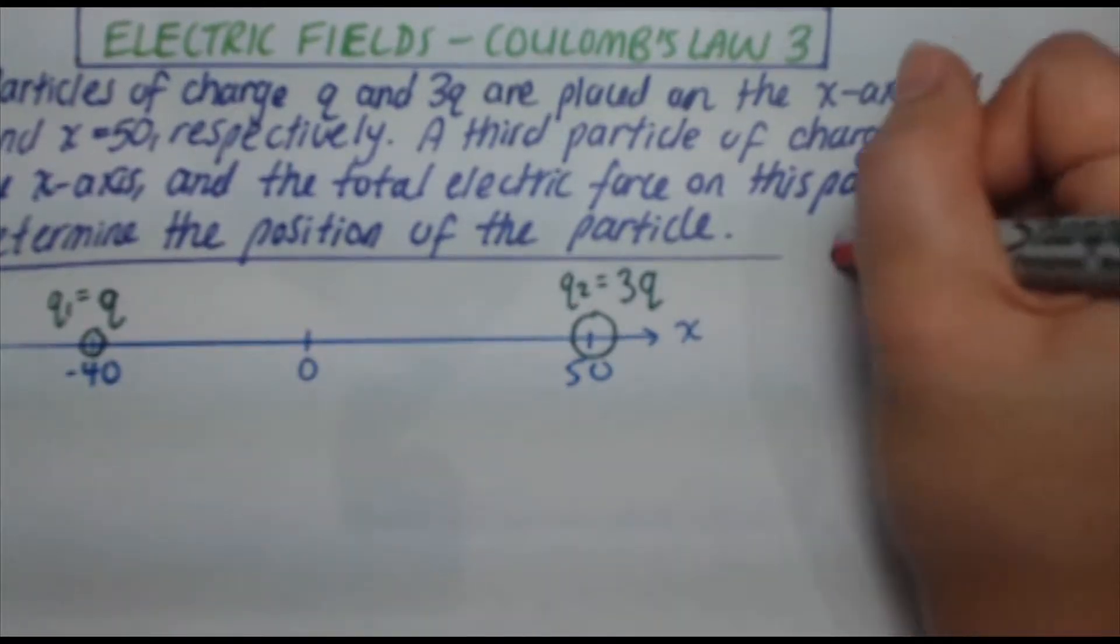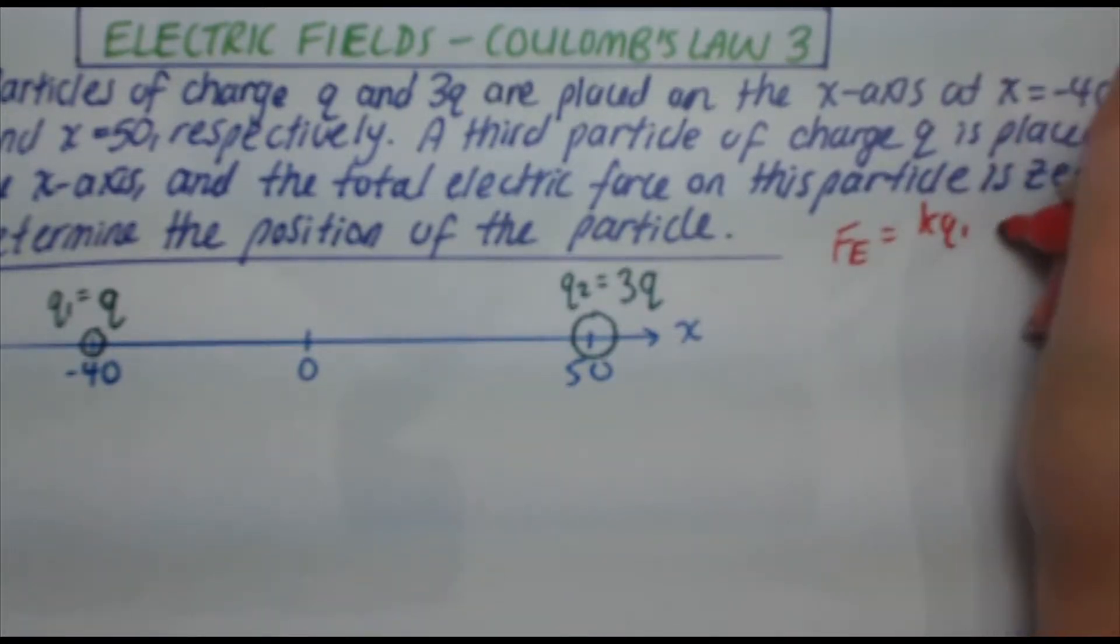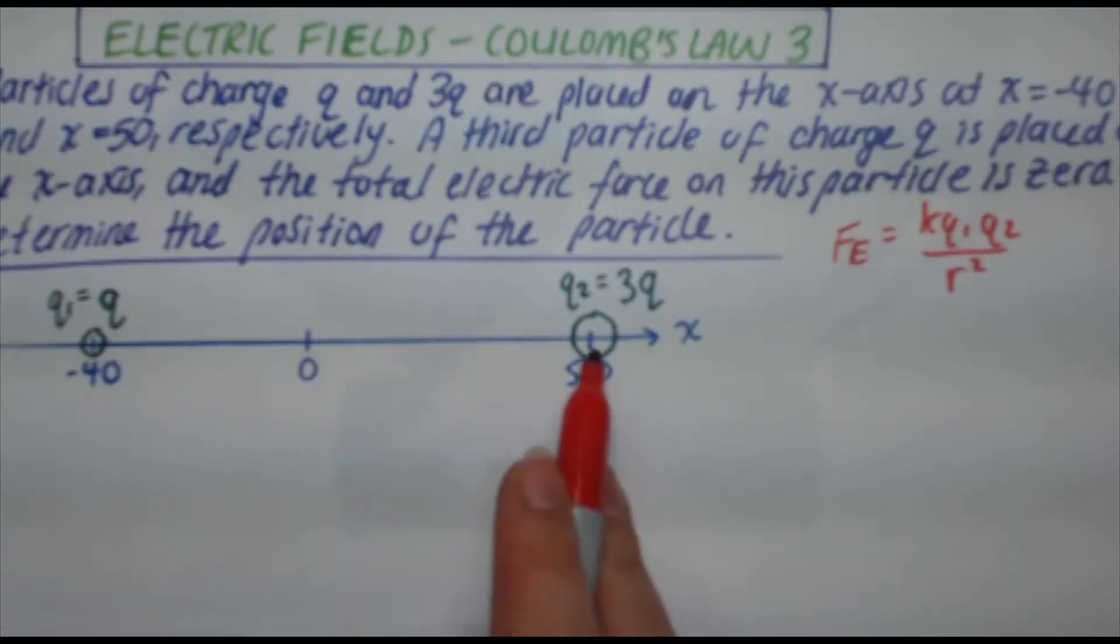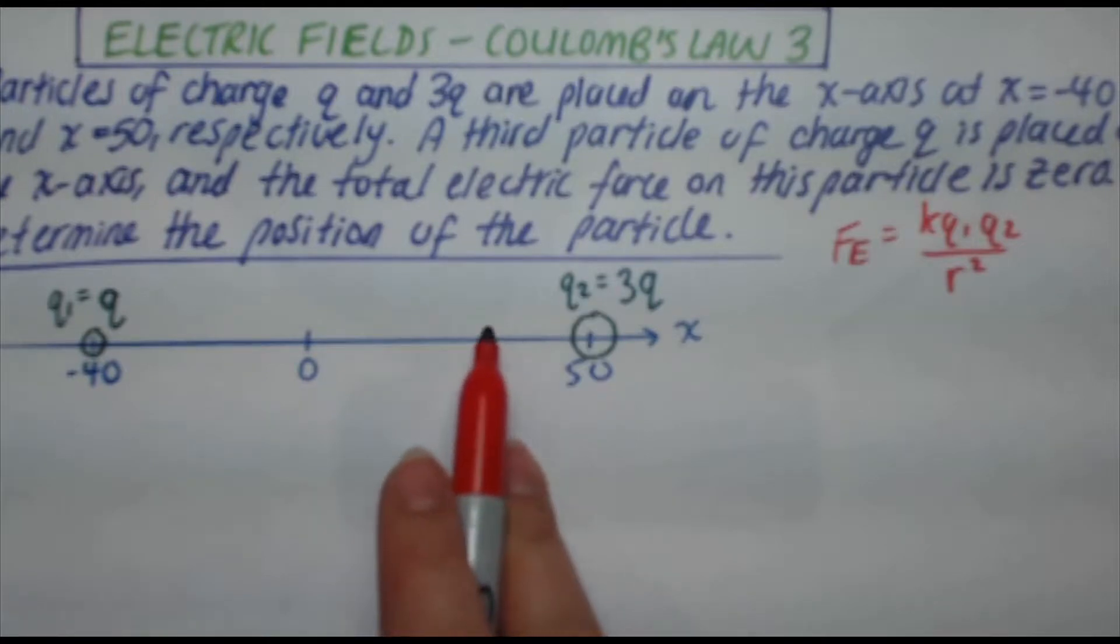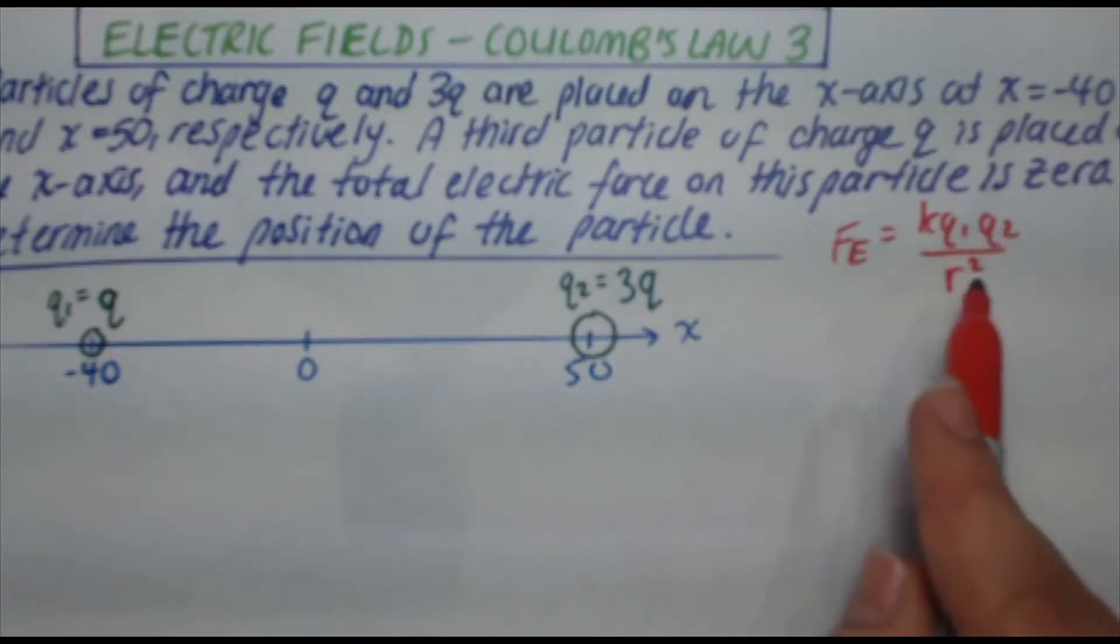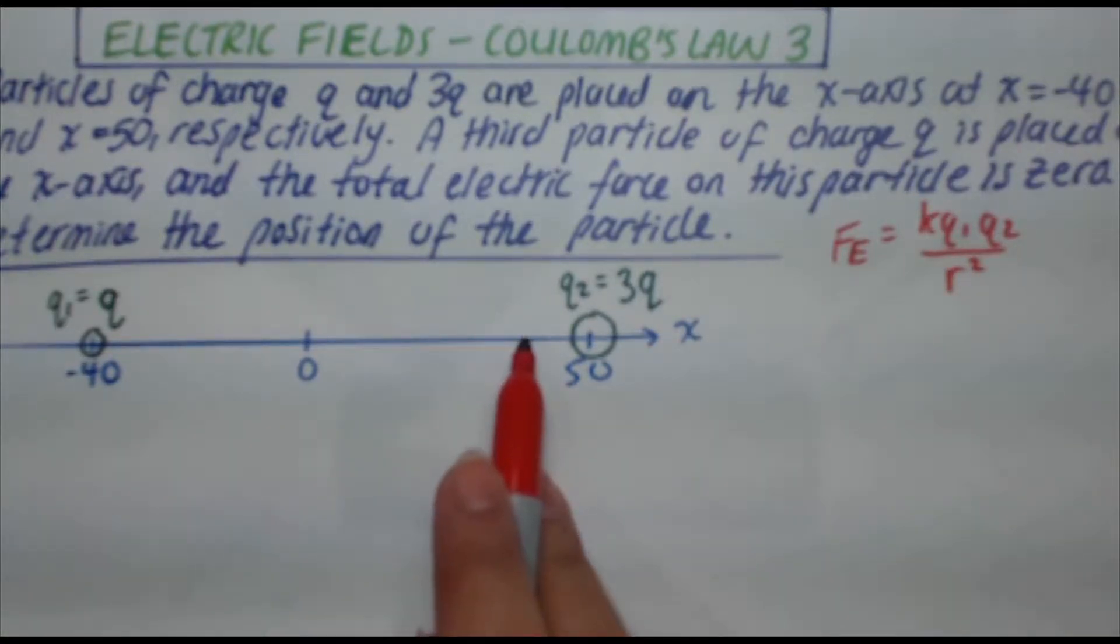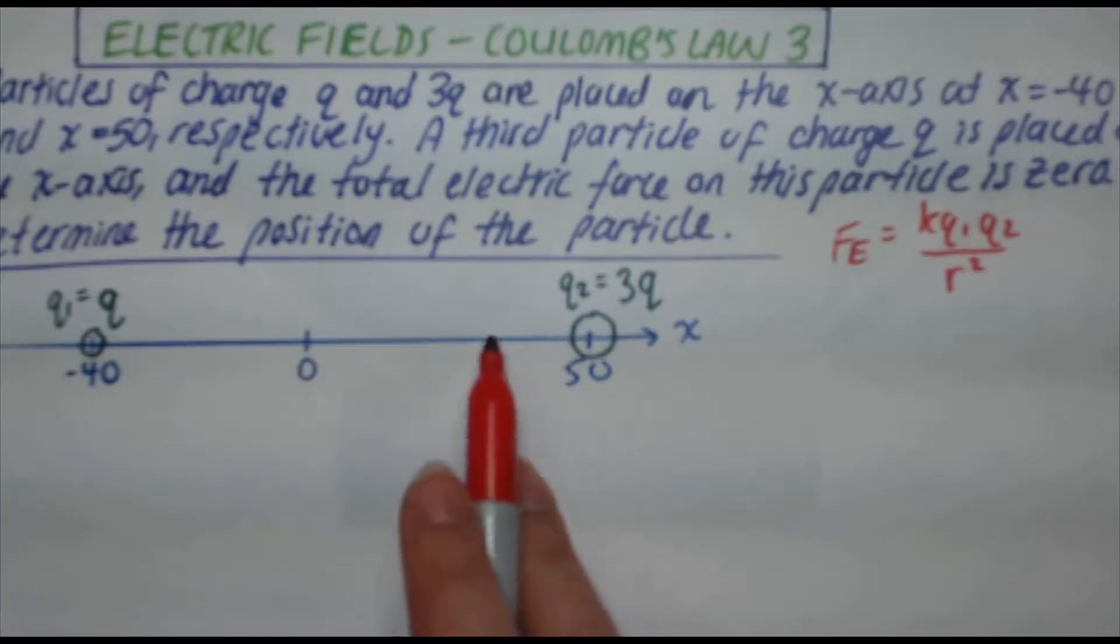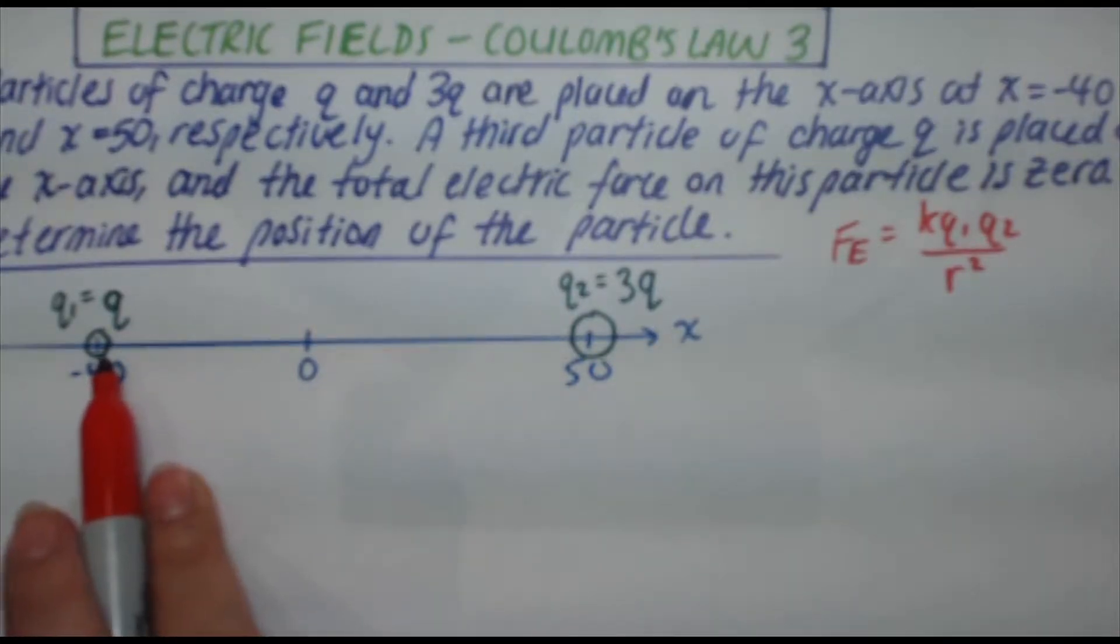Wherever we put the charge it's going to feel repelled by this q2 and this q1. You know that the electric force is given by kq1q2 over r squared. Ask yourself, what if I put it near x equals 50, near the big charge? Well if I put it near the big charge, the kq1q2, the top's going to be the same, right? It's going to be kq times 3q, but my r is very small. So I'm going to feel an incredible repulsion from this charge right here. I'm going to start moving towards the left and I'm feeling a weak repulsion from this because I'm so much further away.